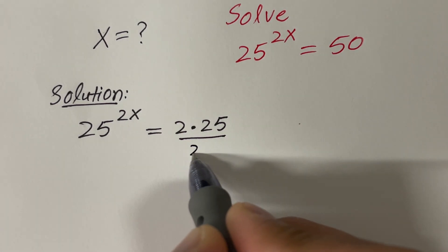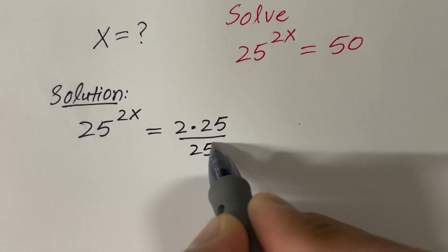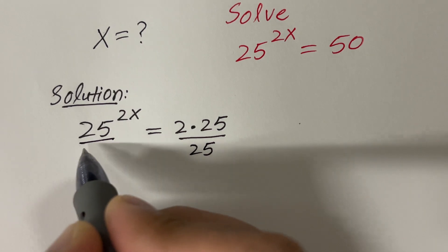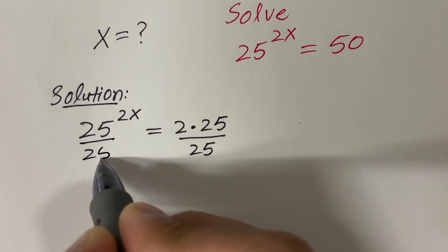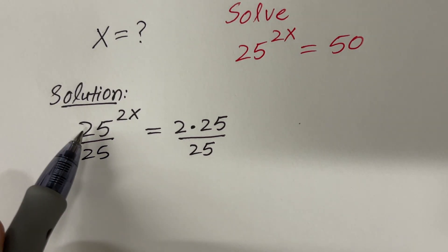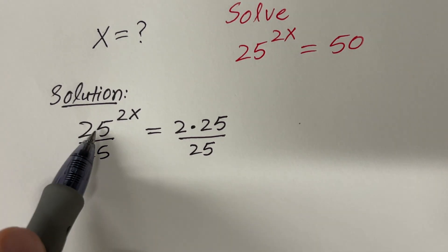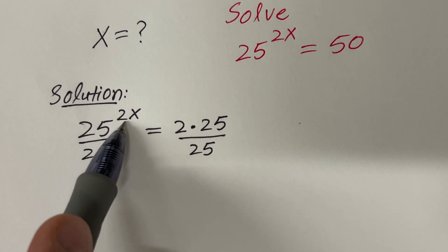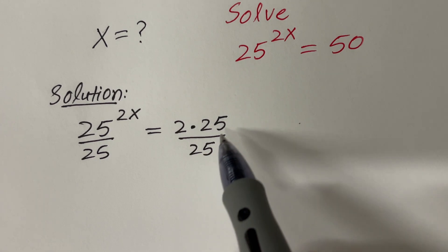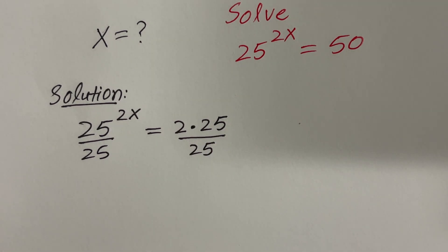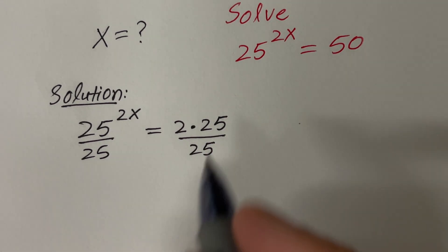I want to divide first of all by 25 on both sides, because if you look at here we have 25 raised to some exponent. Therefore, let's move 25 to one side.